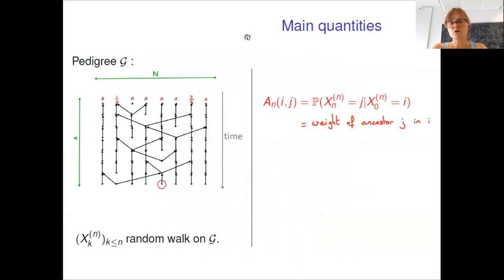Now let's consider the main quantities that we will need. For the moment, let's fix the pedigree graph and consider a random walk XN on this graph. This random walk starts uniformly at time N and moves backwards in time in the pedigree by choosing uniformly between the two parents. XN can be seen as the history of a gene in the population and the quantity AN of IJ, which is the probability that XN equals J knowing that X0 equals I, is the proportion of genome of individual I that comes from ancestor J. It can be seen as the weight of ancestor J in I. This quantity is a deterministic function of the pedigree graph. Here as an example, I give the weight of all ancestors in the genome of this individual.